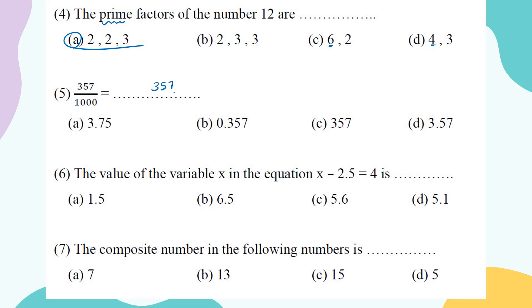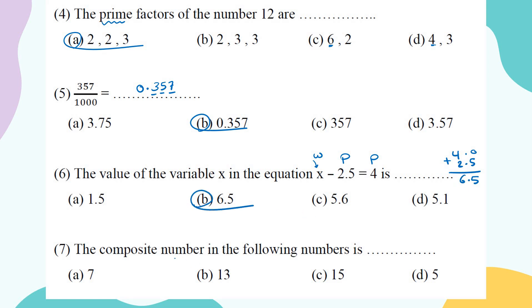The value of variable x in the equation x minus 2.5 equals 4: in subtraction, I start with the whole. Here, x is the whole, and I have two parts. To find the whole, add the two parts: 4 plus 2.5 equals 6.5. So x equals 6.5.